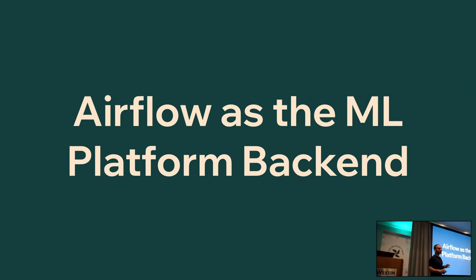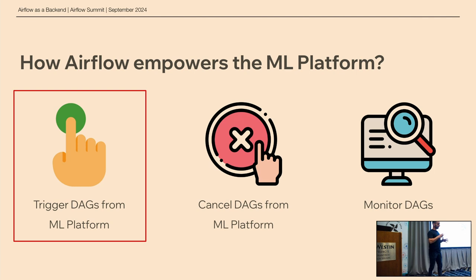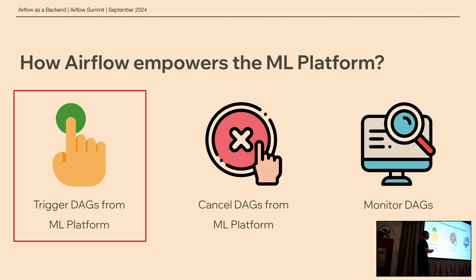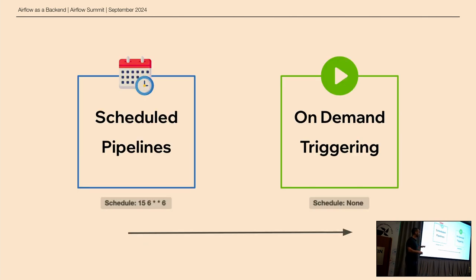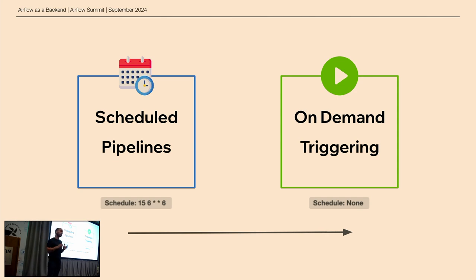So far we've spoken about Wix, the ML Platform, and now let's move on to the most important piece — Airflow — and see how it all fits together. The key thing to understand is that we're not using Airflow as a scheduling tool. We use it as an on-demand tool for triggering DAGs. The schedule interval parameter of all of our DAGs is set to none, because none of them are scheduled — all of them are triggered on-demand.